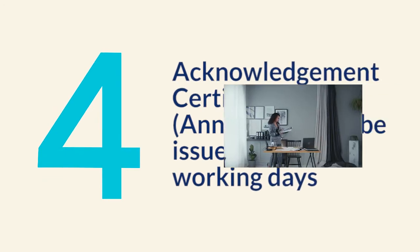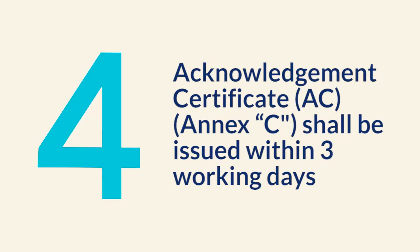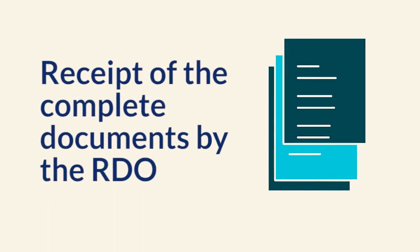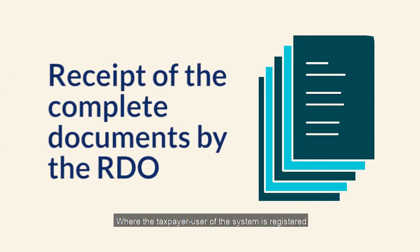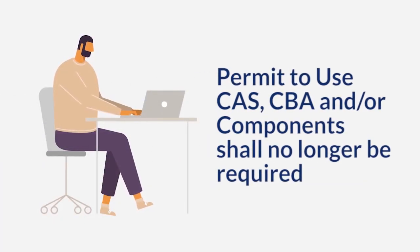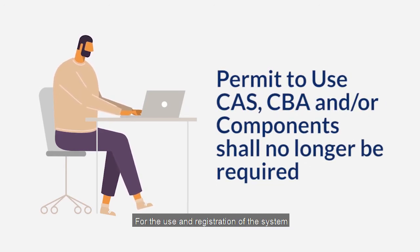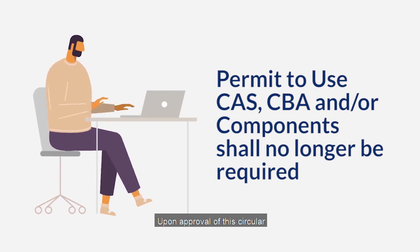Step 4. Upon submission of complete Documentary Requirements, an Acknowledgement Certificate (AC Annex C) shall be issued within 3 working days from receipt of the complete documents by the RDO where the taxpayer user of the system is registered. Hence, permit to use CAS, CBA, and/or other components shall no longer be required for the use and registration of the system upon approval of this circular.